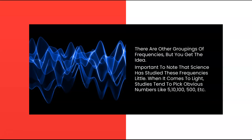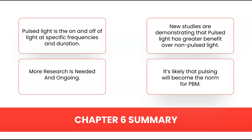It is important to note that studies on these frequencies are very limited. Because there are so many variables when studying light — particularly pulsed light — researchers tend to pick obvious numbers to see if there's a measurable difference between pulsed and non-pulsed, and between a low pulse like 5 hertz and a higher pulse like 100 hertz. In time, as researchers use newer, more reliable measurement tools, we'll see more studies on specific frequencies. Like much research, it begins with anecdotal evidence, which is what's currently occurring with these frequencies in wellness centers and home use devices. In summary, pulsed light is the on and off of light at specific frequencies and durations. New studies demonstrate that pulsed light has greater benefit over non-pulsed, and it's likely that pulsing will become the norm for photobiomodulation — but we still need more research, larger study groups, and consistent measuring techniques.